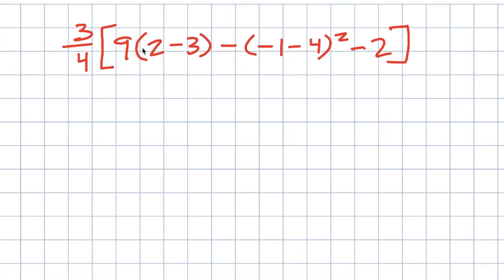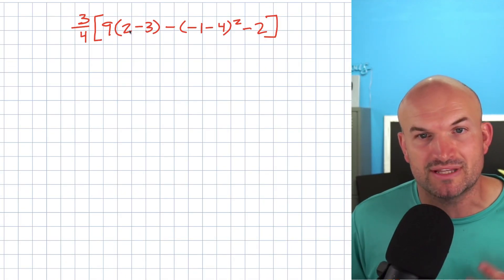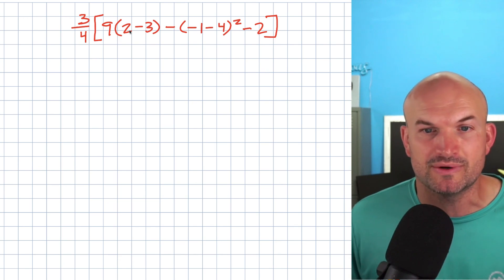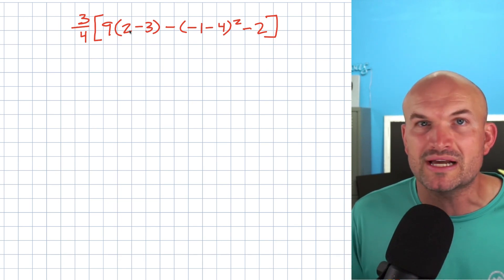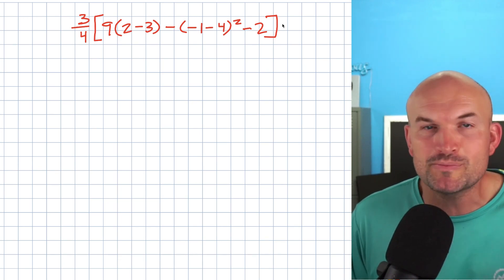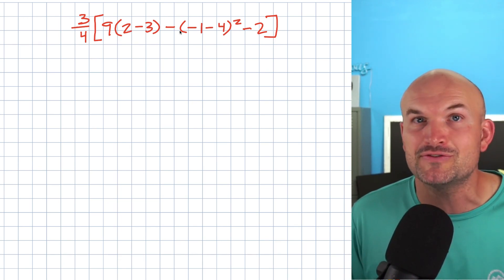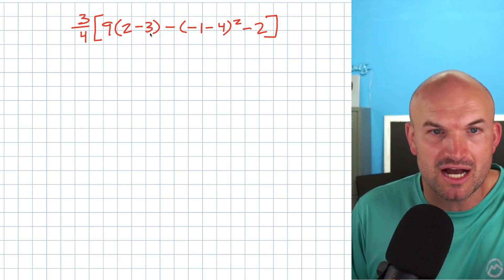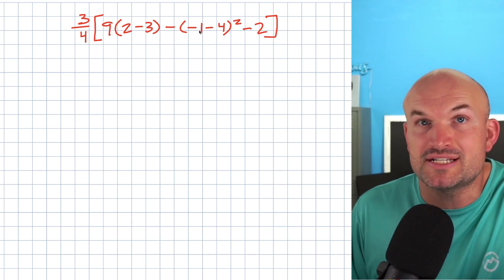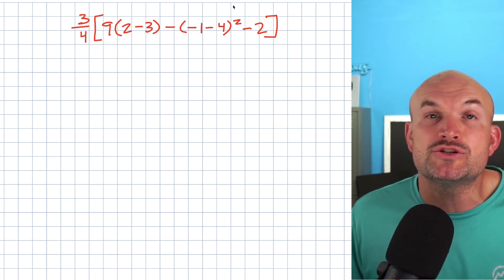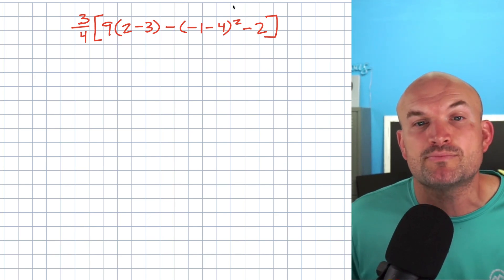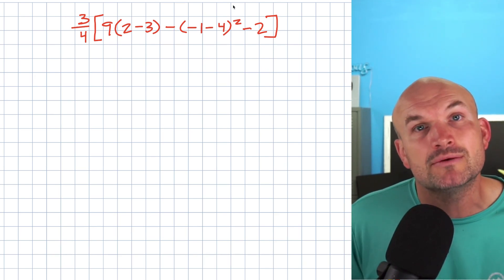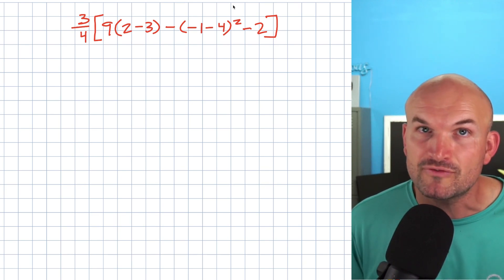That's going to include brackets. That's going to include parentheses. When we're looking at that though, it just says 'do parentheses.' Well, which grouping symbol am I going to do first? The answer is when we talk about doing parentheses first, we always want to do the innermost parentheses or the innermost grouping symbol first.